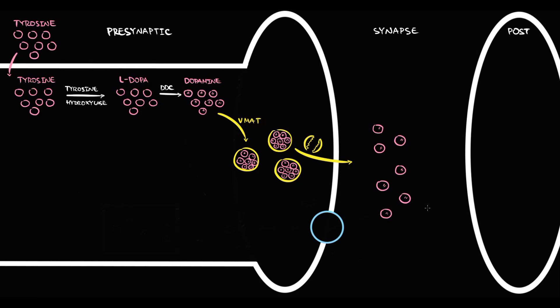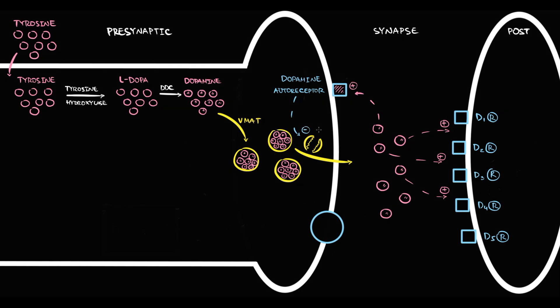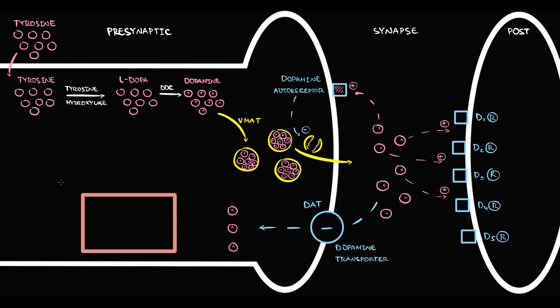Upon depolarization, the neuron pushes vesicles into the synapse — exocytosis — and dopamine molecules enter the synapse. On the postsynaptic neuron we have numerous dopaminergic receptors. Once dopamine molecules appear in the synapse, most of them immediately bind to and activate dopaminergic receptors. Some dopamine molecules bind to a dopamine autoreceptor on the presynaptic neuron; with activation, this receptor inhibits the exocytosis of dopamine vesicles into the synapse, providing reciprocal regulation. Dopamine molecules that did not bind to any receptor are taken up by the dopamine transporter called DAT.